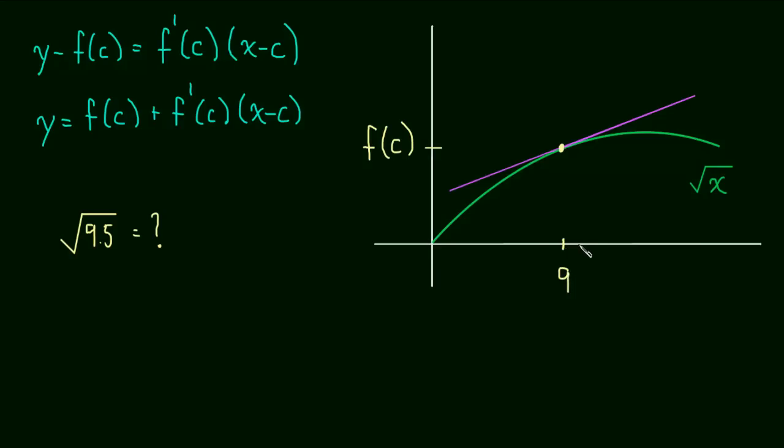So what we can do is, let's not call this c anymore, let's call this 9. And then if we stay really close to 9, or hence 9.5, if we only move over by 0.5, then we should get a pretty good approximation using the tangent line. And so now we have f(9), that's easy to find, f'(9), that's easy to find, and then 9.5 minus 9, that's just 0.5.